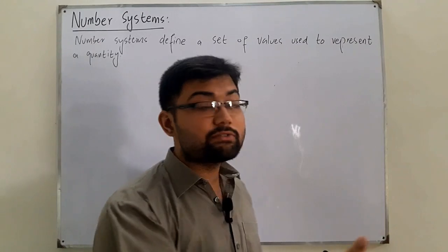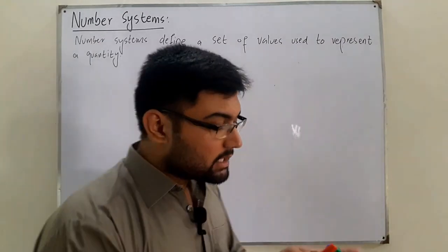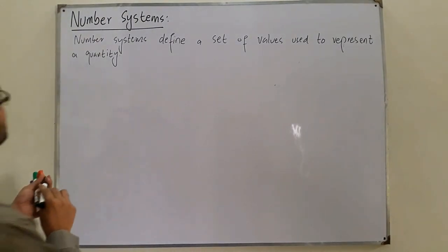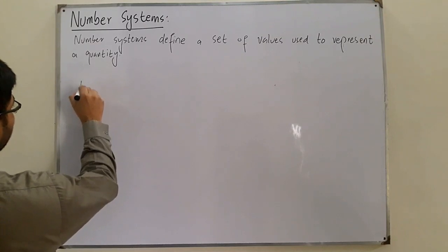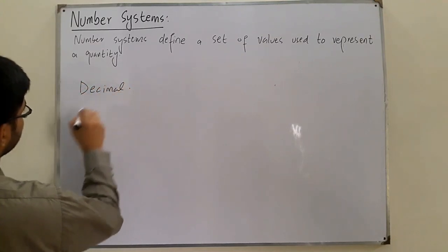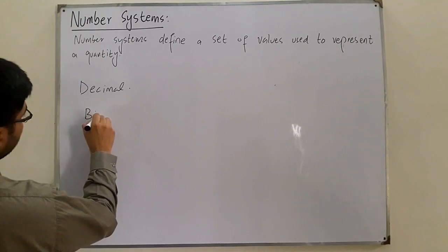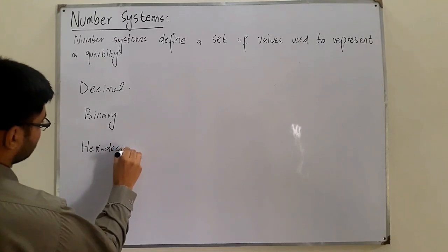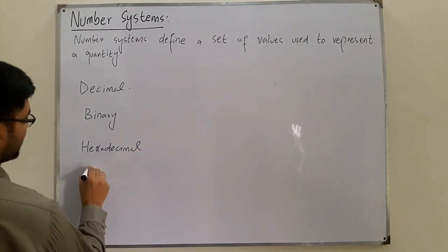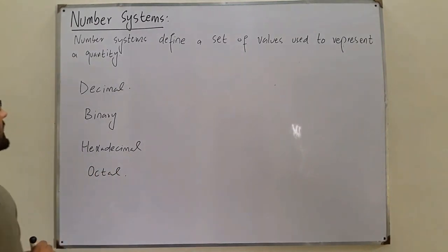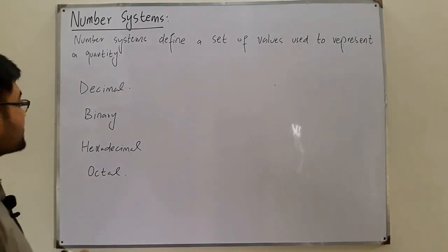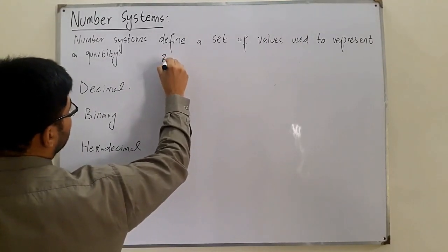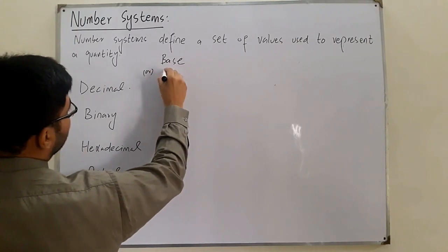In the upcoming lectures we will see interconversions. Now let me write down the most widely used number systems: we have the decimal number system, binary, hexadecimal, and octal — these four are most widely used. We also need to discuss what a base is, which is also called a radix.